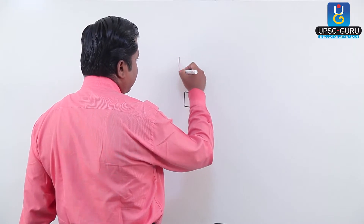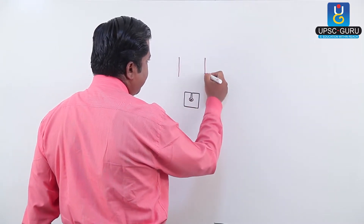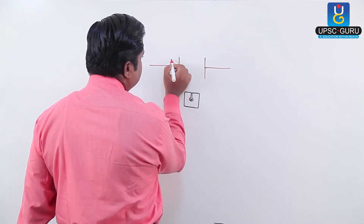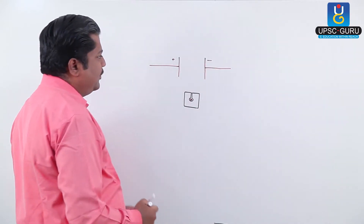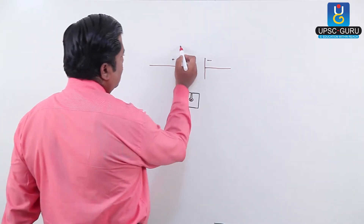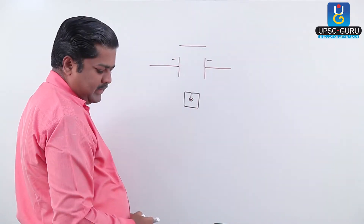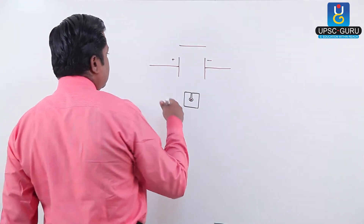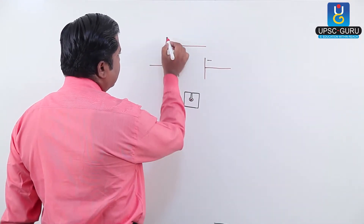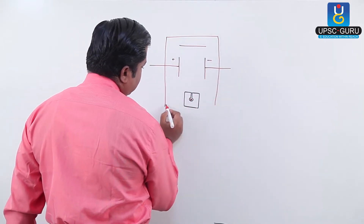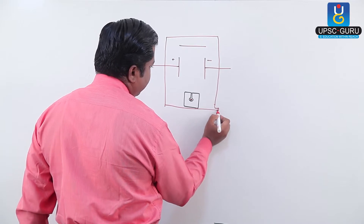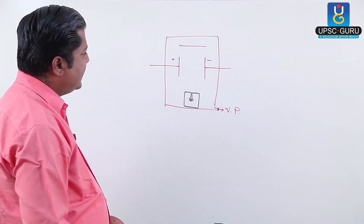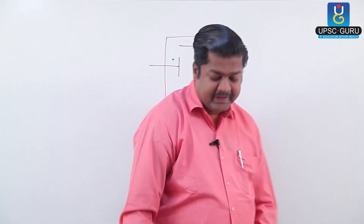Then an electrical field is applied — this is the positive plate and this is the negative plate. There is a photographic plate here. From the side, this looks like a line, but practically it is a photographic plate. This entire assembly is kept in an evacuated chamber connected to a vacuum pump, and obviously kept in the dark, because we have to check the effect on the photographic plate.